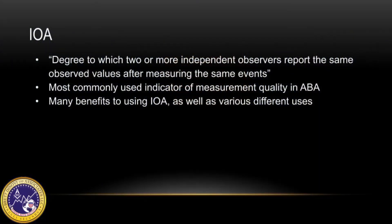This video will cover the fifth edition task list topic C8. Inter-observer agreement, or IOA, is the degree to which two or more independent observers report the same observed values after measuring the same events. It is the most commonly used indicator of measurement quality in ABA.